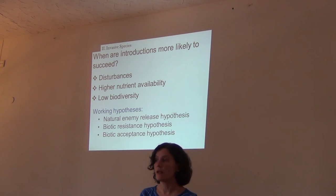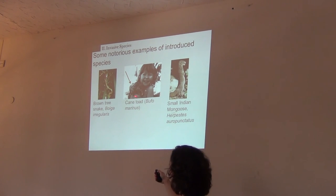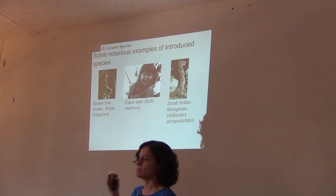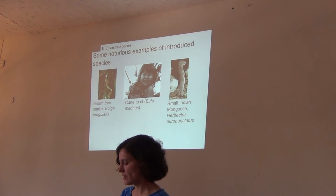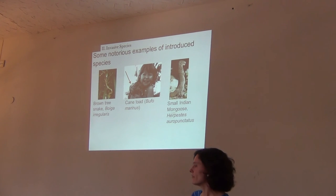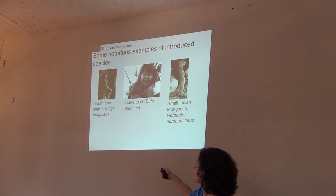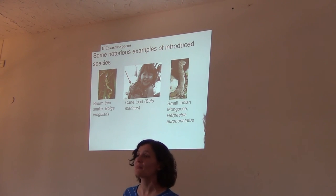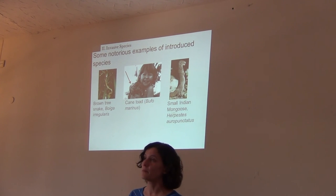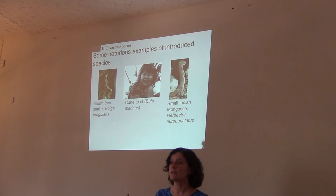Some famous examples of invasive species include the brown tree snake, the cane toad, and the small Indian mongoose, which was introduced to the Caribbean islands and caused the extinction of several species. The brown tree snake dramatically reduced bird diversity on Guam Island. These are famous cases, but there are thousands of introduced species around the world that have generated local extinctions across different continents.